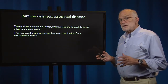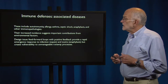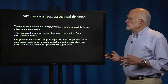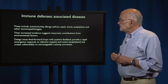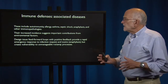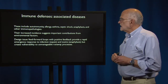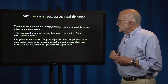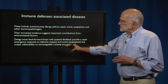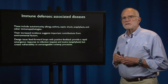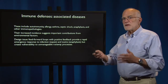Their increased incidence in the modern world indicates important contributions from environmental factors. The design issue is this: the systems are designed with feed-forward loops with positive feedback, done to provide a rapid, massive emergency response to infection — that's associated with sepsis — and with toxins, which leads to anaphylaxis. But this creates vulnerabilities to unmanageable runaway processes, which is why things like sepsis and anaphylaxis hit so quickly and cause such massive symptoms.